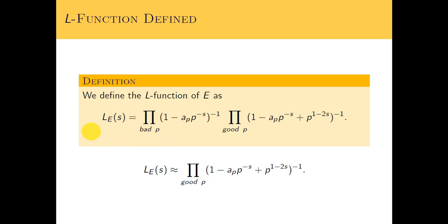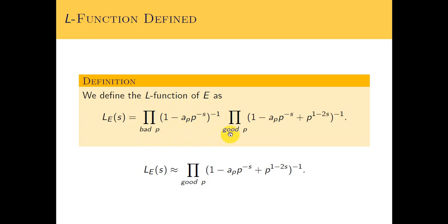Remember last time how we talked about how there's a finite number of bad P, because if you go far enough out then P won't divide the discriminant — P will be bigger than the discriminant. So there's a finite number of bad P. We can consider just the good P, because there's a finite number of bad P and it's not going to affect what we're interested in, which is the order of vanishing of the L-function. This factor will never be zero, so it's not going to affect the order of vanishing.